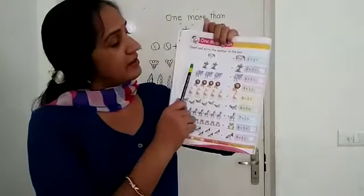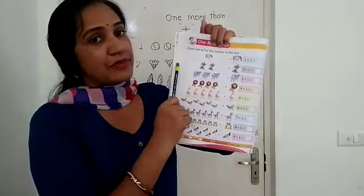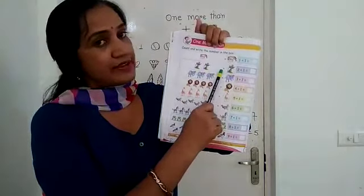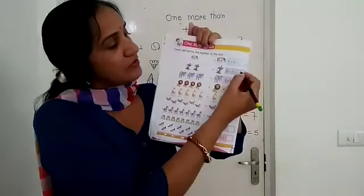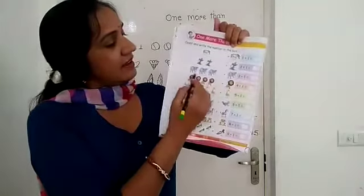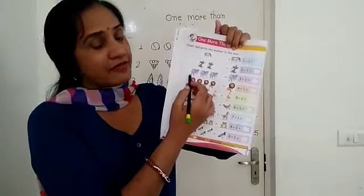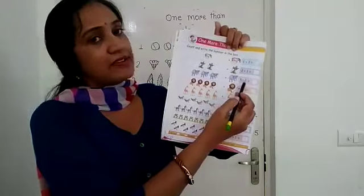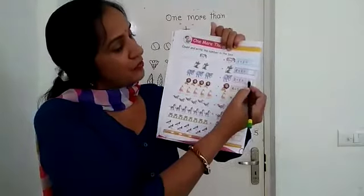And next. Next example. How many mice are here? One, two. Two plus one. Two plus one, three. And elephants. Let's count. One, two, three. Three plus one, three plus one, four.